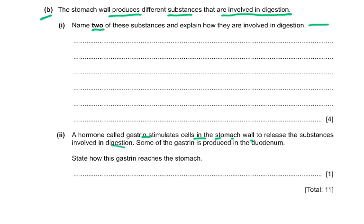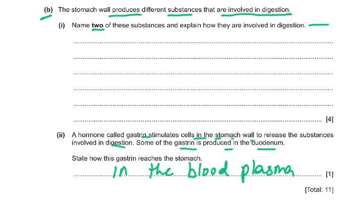A hormone called gastrin stimulates cells in the stomach wall to release substances involved in digestion. Some of the gastrin is produced in the duodenum. State how the gastrin reaches the stomach. The answer is very easy: in the blood, or more precisely, in the blood plasma. Blood plasma is a better term because blood is plasma plus all the cells in it.